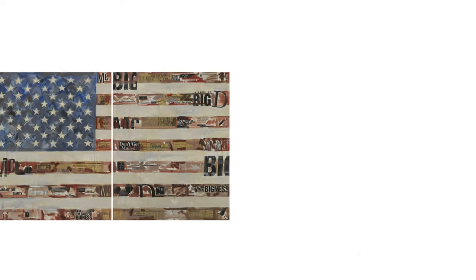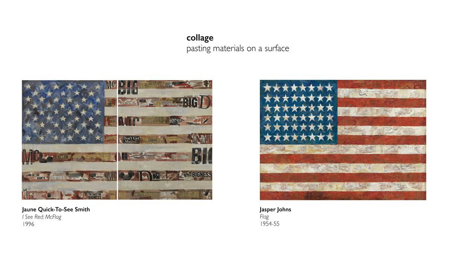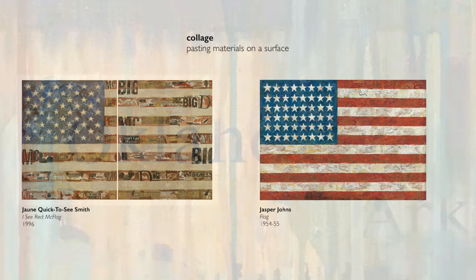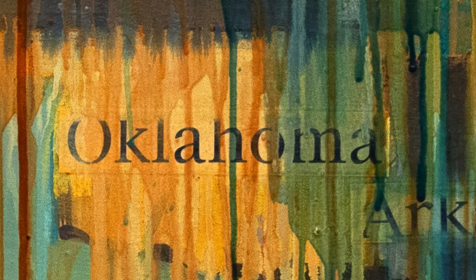Smith was trained as an abstract expressionist, and we may think of maps and Jasper Johns. We may think of collage, because what she has here — the names of the states — are clippings that are put over the paint, and then paint is put over the clippings. So we have these really rich layers in this work.